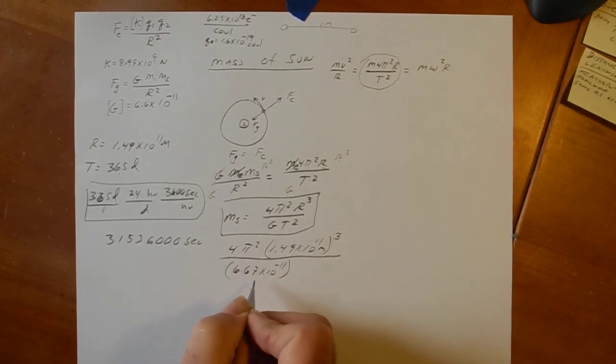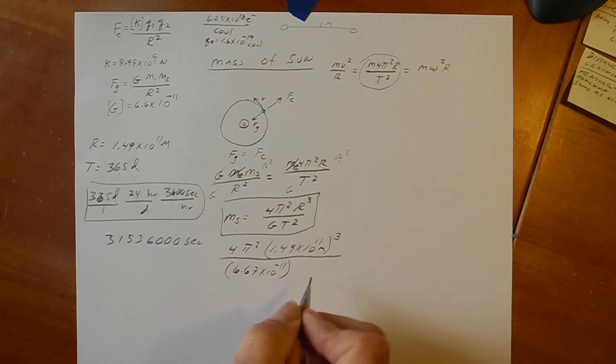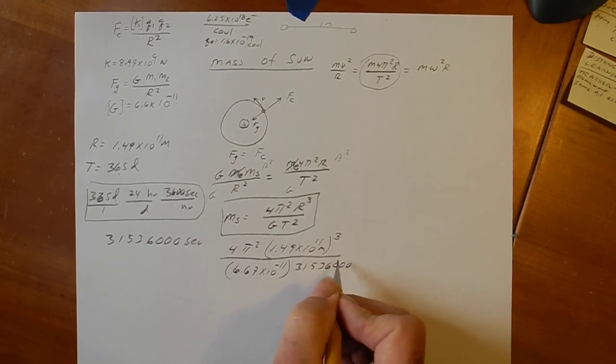Now, it's getting huger because we're dividing by a decimal. And then, also divide it by 1, 3, 1, 5, 3, 6, 0, 0, 0. Ooh! It made it smaller.